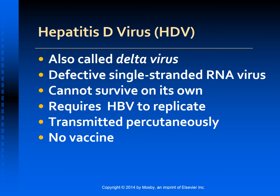Hepatitis D virus, also called the delta virus, is a defective single-stranded RNA virus that cannot survive on its own — it requires hepatitis B to replicate. It can be acquired at the same time as HBV, or a person with HBV can be infected with HDV at a later time. HDV is transmitted percutaneously, similar to HBV. It can cause a spectrum of illness ranging from an asymptomatic chronic carrier state to acute liver failure. There is no vaccine for HDV; however, vaccination against HBV reduces the risk for HDV co-infection.